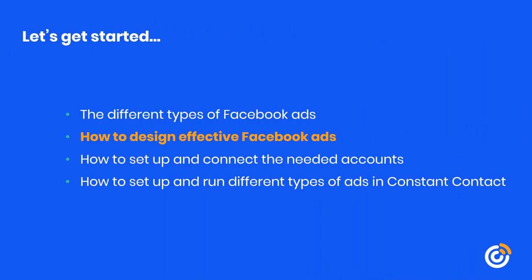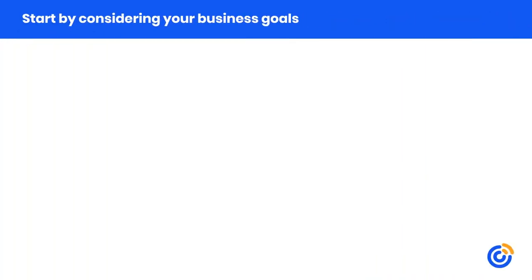Now that we have some good benchmarks and an idea of the types of ads you can run, let's discuss some strategies to design an effective ad. In order to determine the type of ad you want to run and be effective with it, the first thing you need to do is set a goal. You may be looking to increase sales, drive traffic to your website, collect RSVPs for an event, grow your audience, get more volunteers, or collect donations — just a few examples.